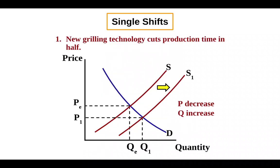So now let's look at an example of equilibrium changing. So all three of these examples that I'm going to show you, we're going to assume that the good or service that this is a market for is hamburgers. So in this example, there's new grilling technology that cuts production time in half. So notice that our original equilibrium is PE and QE. Because of the better technology, we know from topic 2.2 that we're going to move supply to the right.